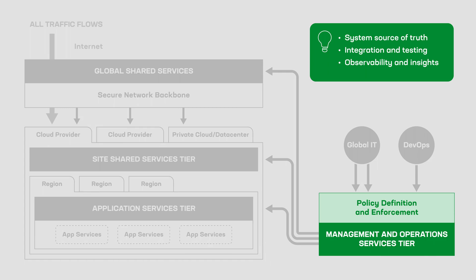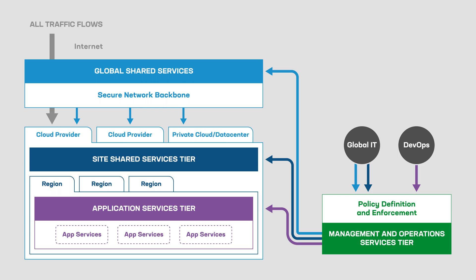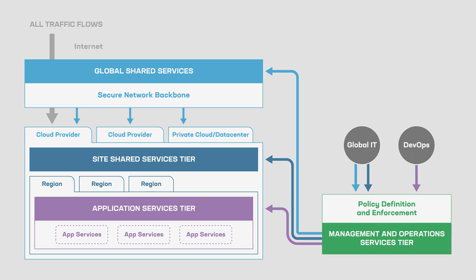With the right tooling, automation, and processes in place, you can boost operational performance and benefit from positive feedback loops with machine learning systems. Although these are conceptual tiers, they're a great way to simplify operations, consolidate services, and unify your application security and delivery policies.